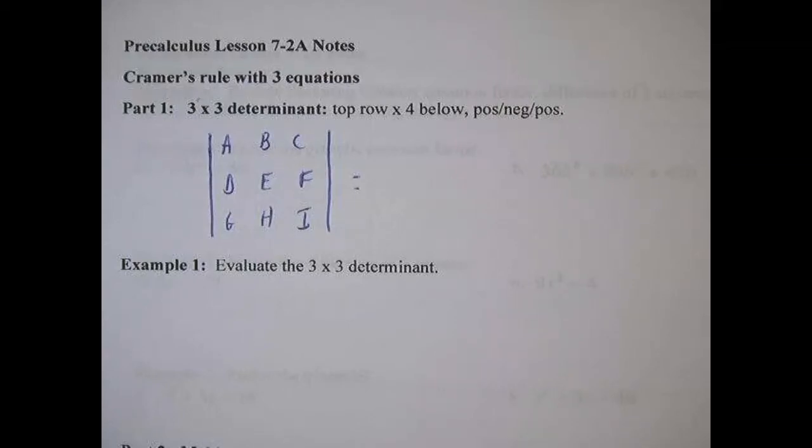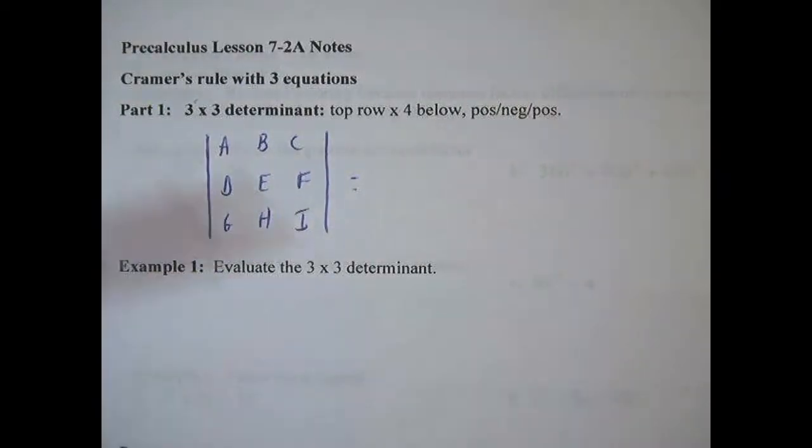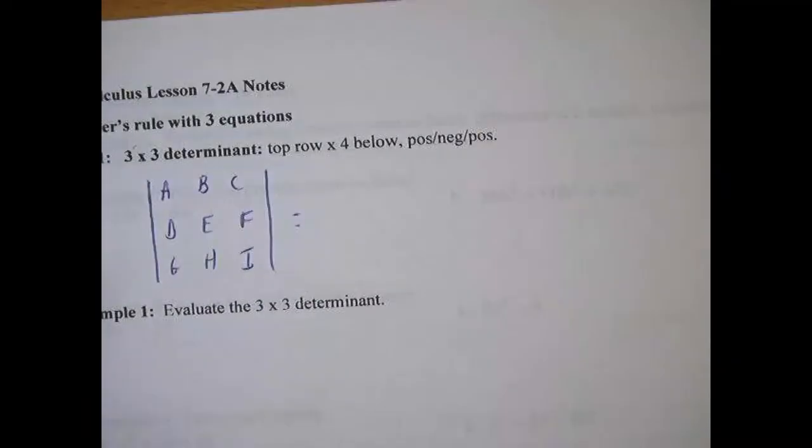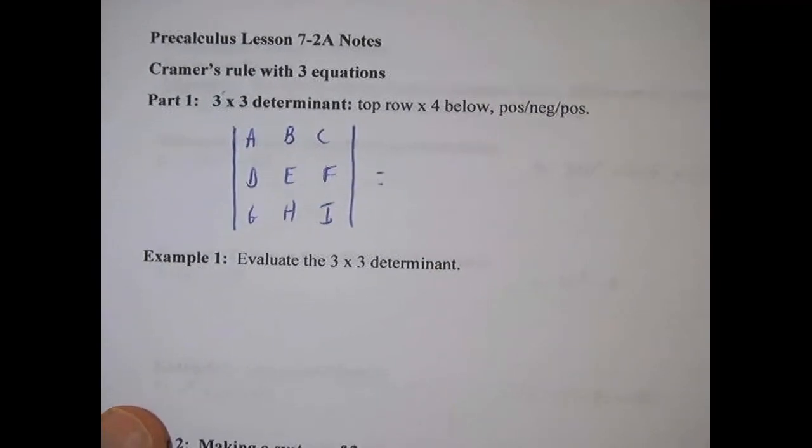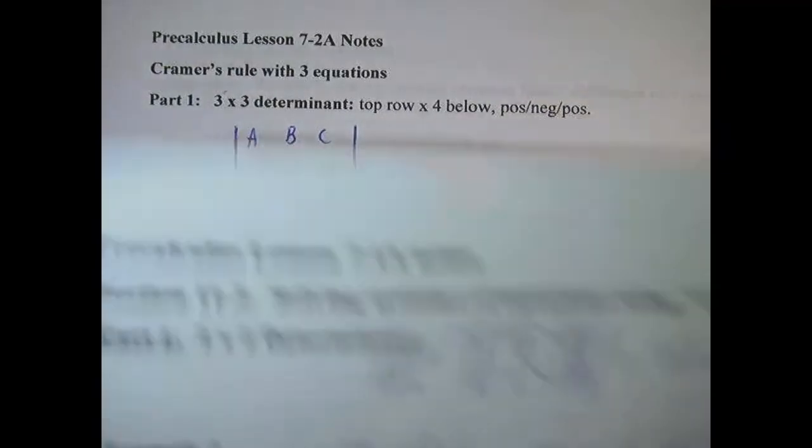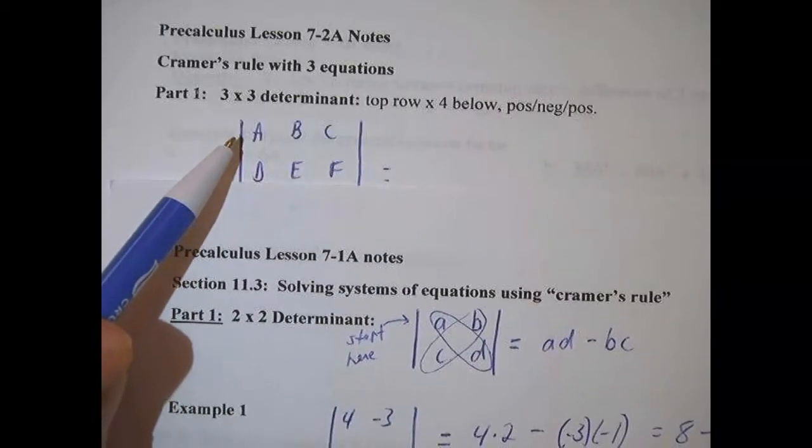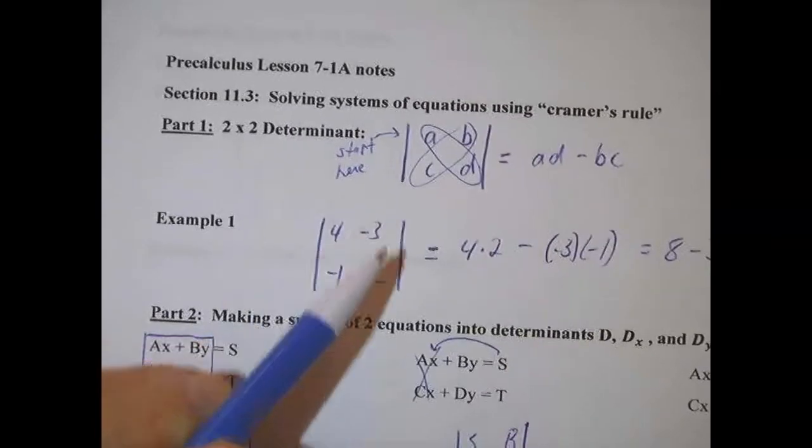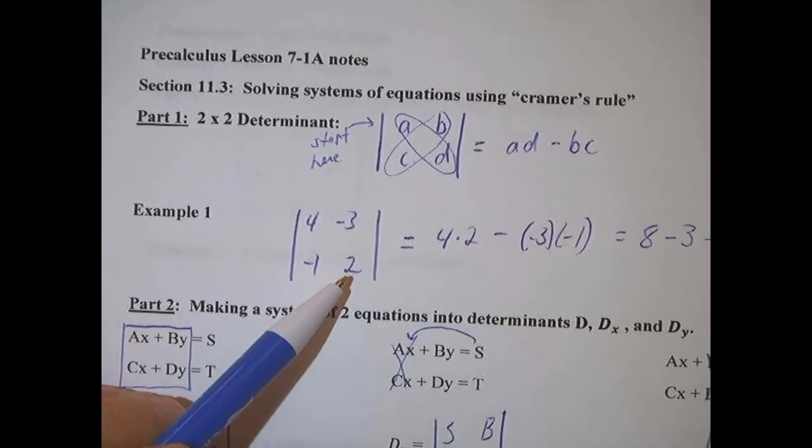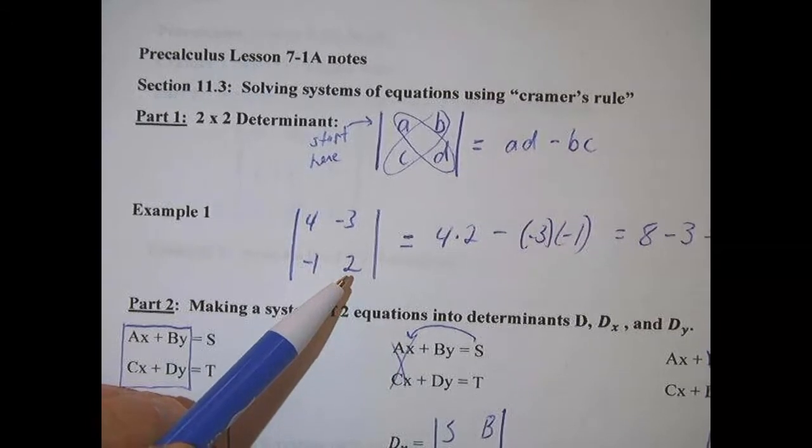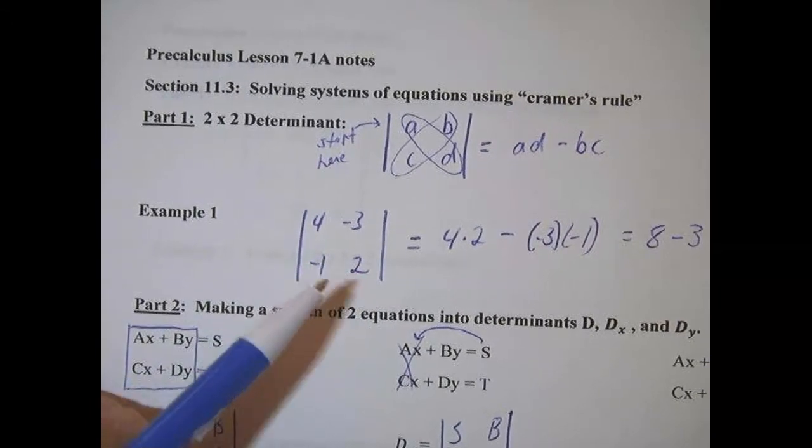Hello Precalculus students and welcome to a video on Cramer's rule with three equations. Before you do this video you have to understand the idea of a determinant with a 2 by 2. We talked about 2 by 2 determinants, now we're going to talk about 3 by 3 determinants. You need to know how to solve these 2 by 2's because when you solve a 3 by 3 it requires you to solve three different 2 by 2's.